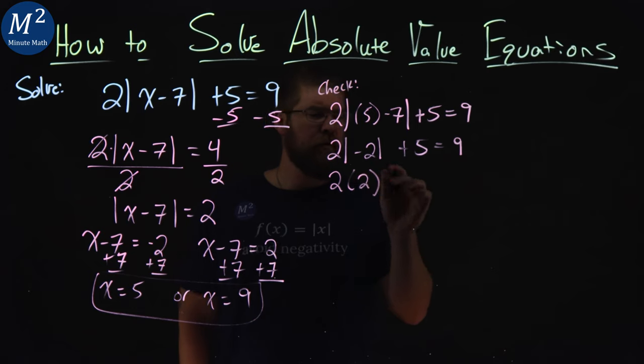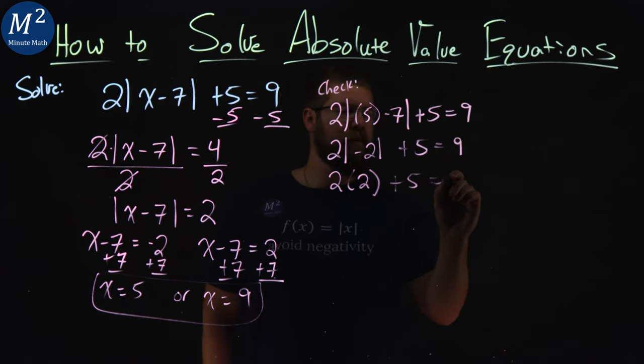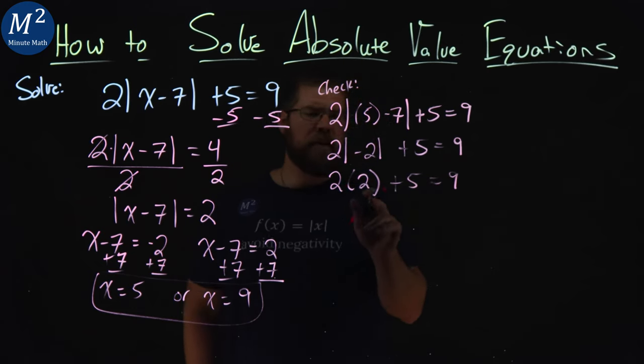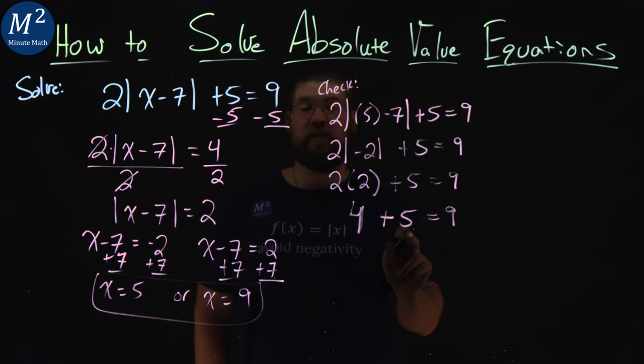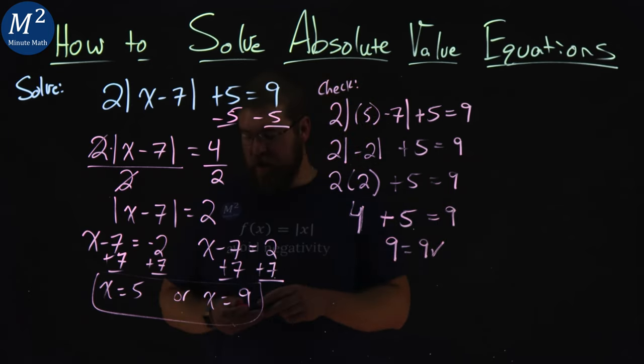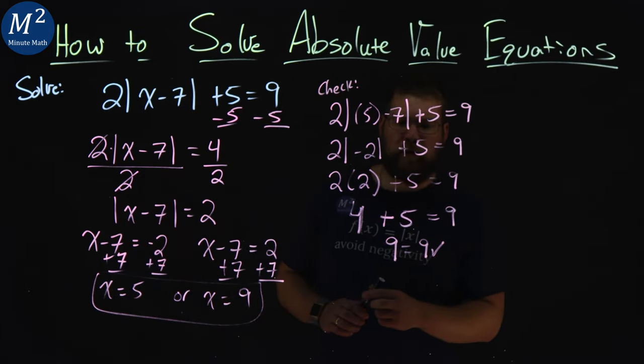Absolute value of negative 2 is positive 2. So 2 times the positive 2 here, plus 5 is equal to 9. 2 times 2 is 4, and my marker is dying here, plus 5 is equal to 9, and 4 plus 5 is also equal to 9. Left and right hand side check out, so we are good. Let's check the next one.